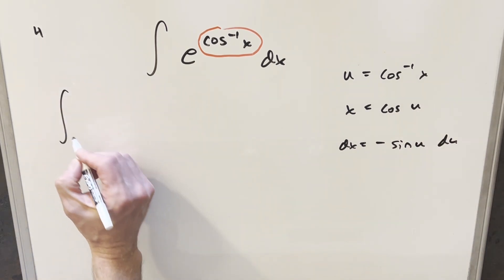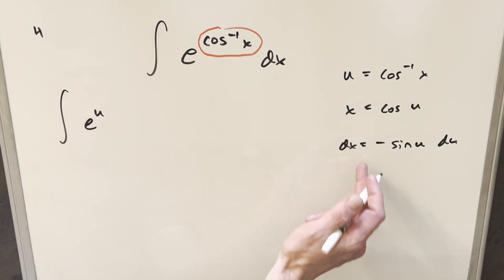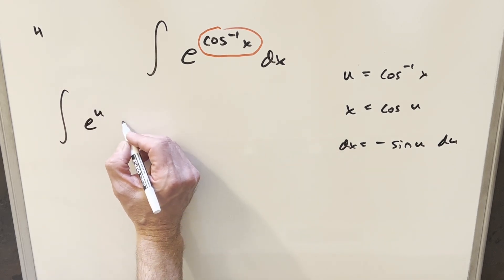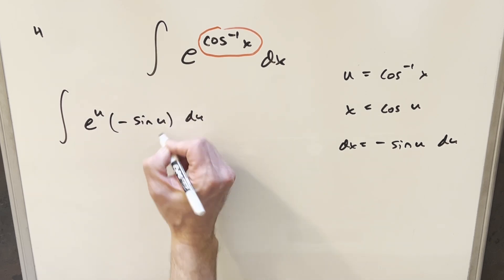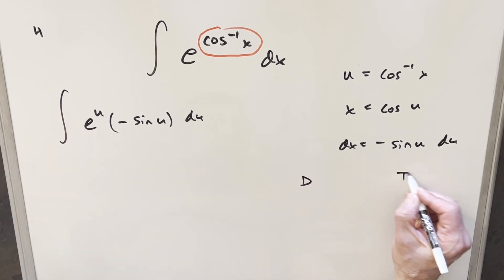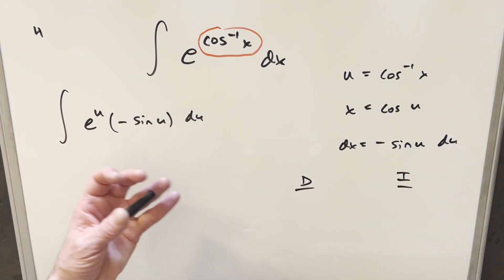So now we'll just go ahead with our substitution over here. This will become e to the u. dx is going to become minus sine u du. And now that we have two things in our integral, I think this is a good case for integration by parts. I'll use the DI method over here on the right, and it's not really going to matter which I choose to differentiate and which I choose to integrate.